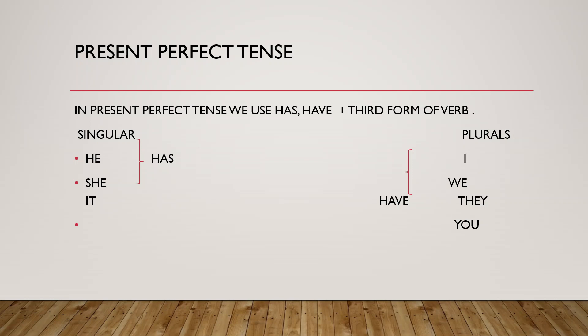Let's talk about present perfect tense now. In present perfect tense, we use has and have plus the third form of verb. With singular: he has, she has, it has. And with plurals: I have, we have, they have, you have.